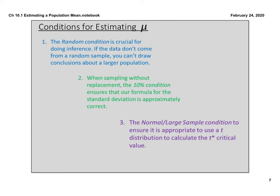So let's talk about conditions for estimating mu. The conditions are pretty similar to what we did for proportions. We need to state randomness — that's an absolute must. Randomness is crucial for doing any sort of inference, which is what confidence intervals and tests are. Then with sampling without replacement, there's the 10% condition. And then normal/large counts.